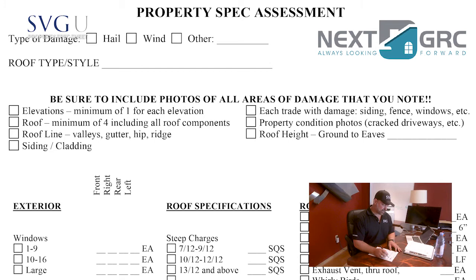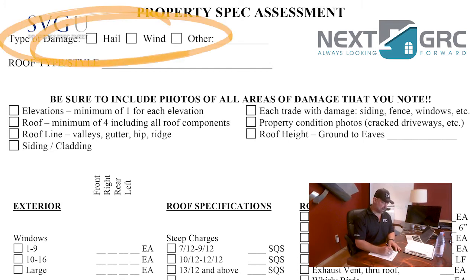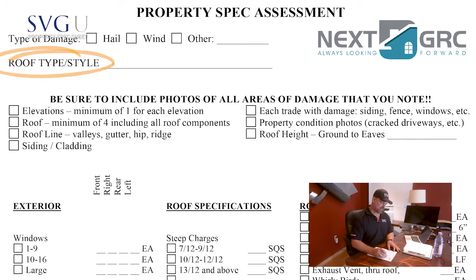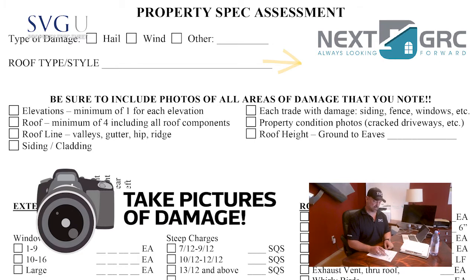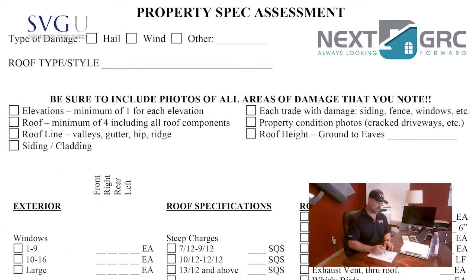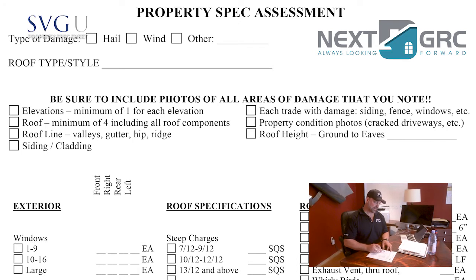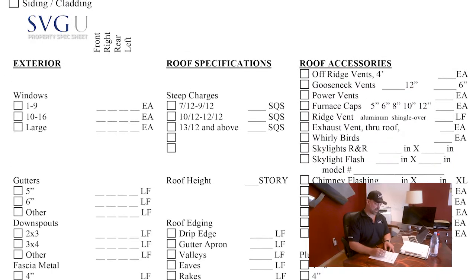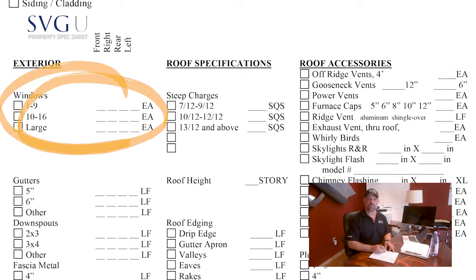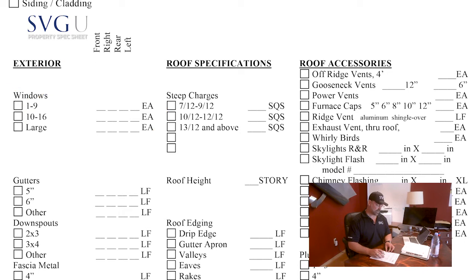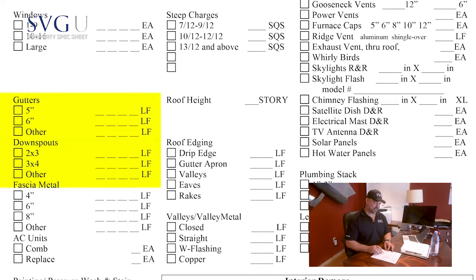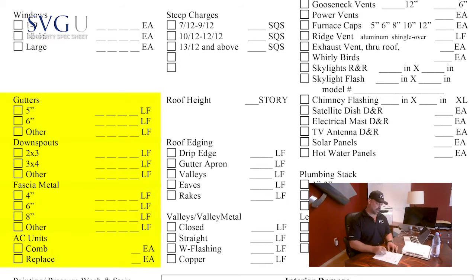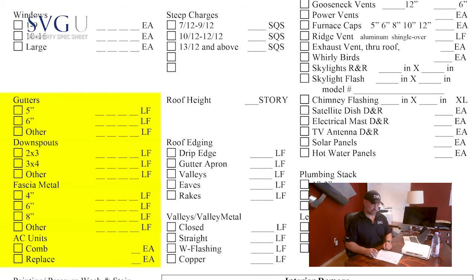Looking at a property spec sheet — pretty simple. What type of storm was it? Hail, hurricane, wind. What type of roofing system? It's really important to include photos of all areas of damage you note on the property over each elevation. On your exterior left column you have front, right, rear, left — just like the adjuster walks around the property and writes it by elevation. How many window screens were damaged? How many windows by elevation? How many gutters, downspouts, fascia, AC units — all that exterior stuff — and this will quickly tell whoever's writing the estimate later on how to properly write it.